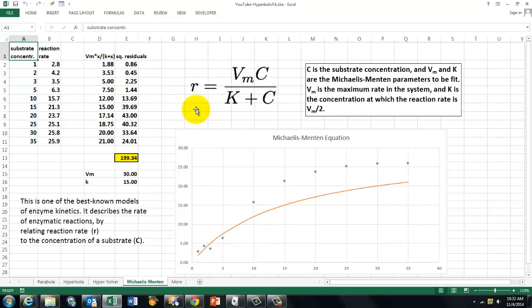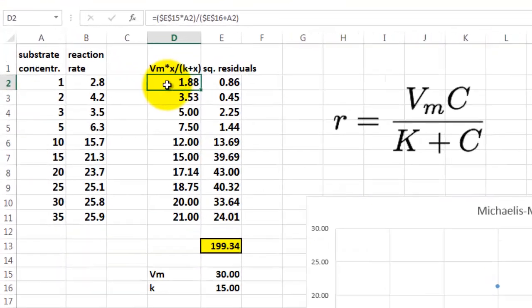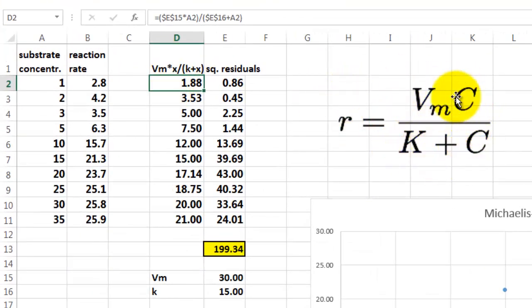So once we apply that formula, and that is what I did here, so you know that formula now, this is the equation. You multiply E15, which is Vm, the maximum rate in the system, times A2, the substrate concentration, divided by the K parameter, plus the substrate concentration. And we get all these values.